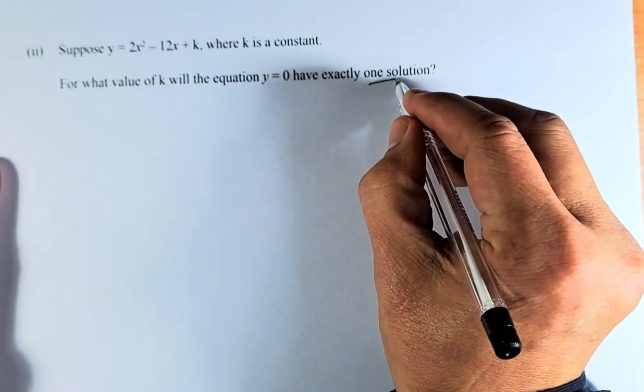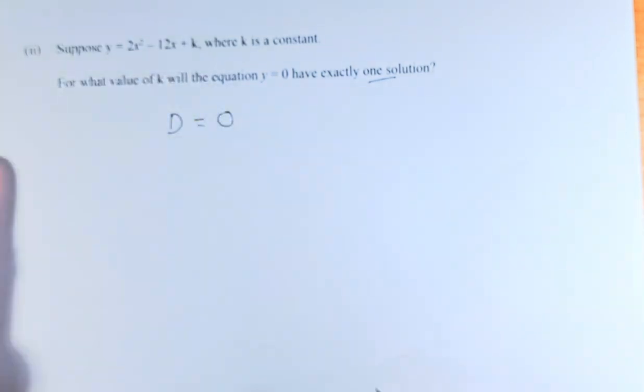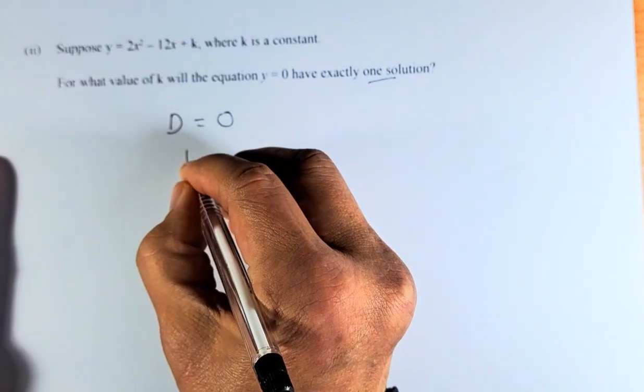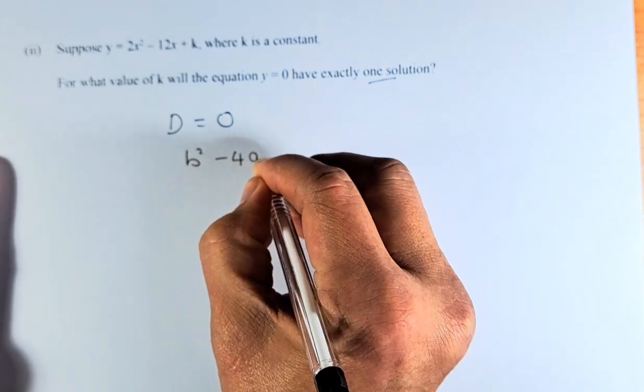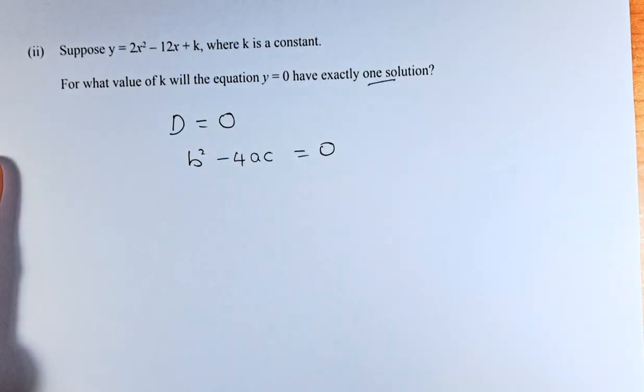So when you have one solution, you need to know this: the discriminant equals 0. So in other words, b² - 4ac must be equal to 0. So to get the answer for k, we need to substitute.